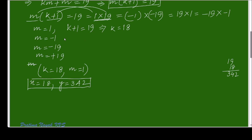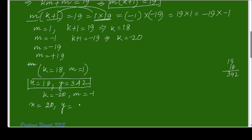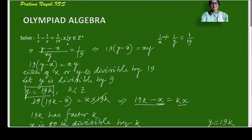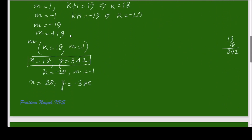Case 2: m equals minus 1, so k plus 1 equals minus 19, giving k equals minus 20. Then x equals km equals minus 20 times minus 1 equals 20, but y equals 19k equals 19 times minus 20 equals minus 380. Since x and y must be positive integers, this solution is rejected.